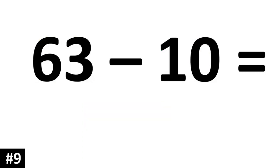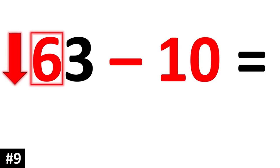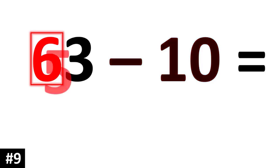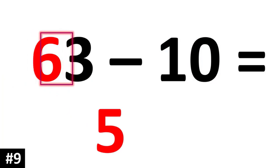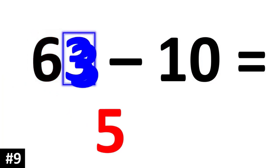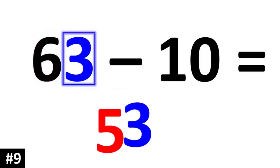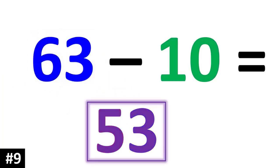63 minus 10. 63 has a tens digit of 6. Subtracting by 10 means the tens digit is going to go down to 5. The other number stays the same, so 63 minus 10 is 53.